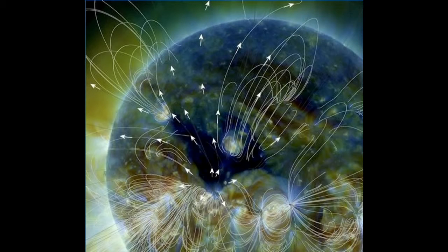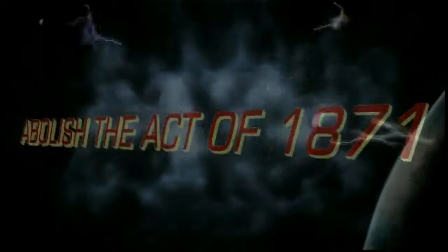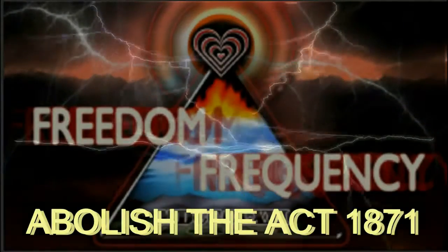A stream of solar wind flowing from this particular coronal hole could reach Earth on January 2 to 3, possibly sparking polar geomagnetic storms. The first auroras of 2014 are in the offing.